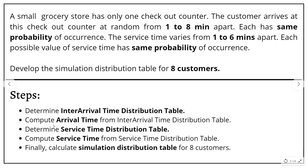The second step is to compute the arrival time from the inter-arrival time distribution table. For example, assume the first customer arrives at time 0. If the second customer comes after 5 minutes, the arrival time of the second customer is 0 plus 5, which is the 5th minute. Similarly, we will determine the service time distribution table and compute the service time. After these four steps, we will finally calculate the simulation distribution table for eight customers.